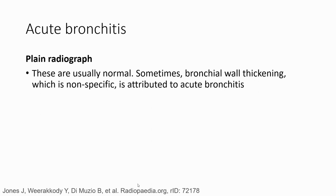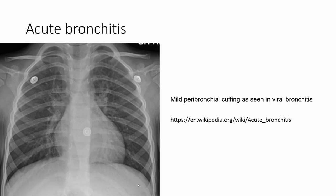On chest X-ray, findings are usually normal. Sometimes we can find bronchial wall thickening, which is non-specific and attributed to acute bronchitis. Mild peribronchial cuffing can be seen in viral bronchitis. We can see the pathological processes happen proximally, close to the main bronchi, but peripherally the lung is clear.